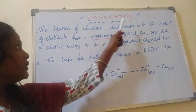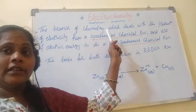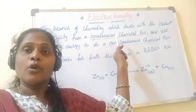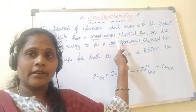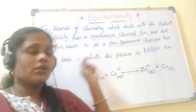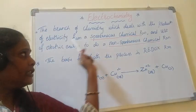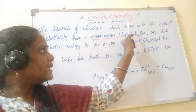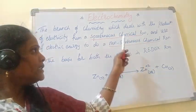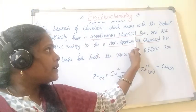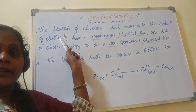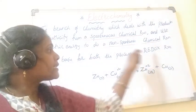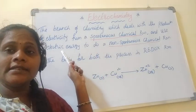So let us see the definition. The branch of chemistry which deals with the production of electricity from a spontaneous chemical reaction, and the use of electricity to do a non-spontaneous chemical reaction. These are exactly opposite: from a spontaneous chemical reaction, electricity is generated, but to do a non-spontaneous chemical reaction, electricity is required.